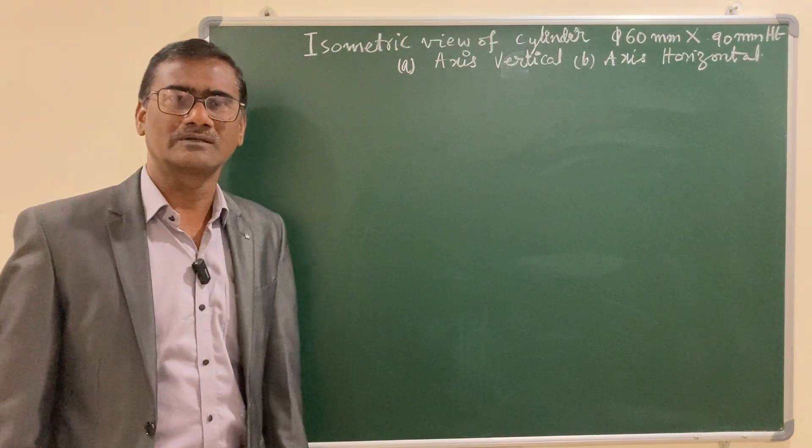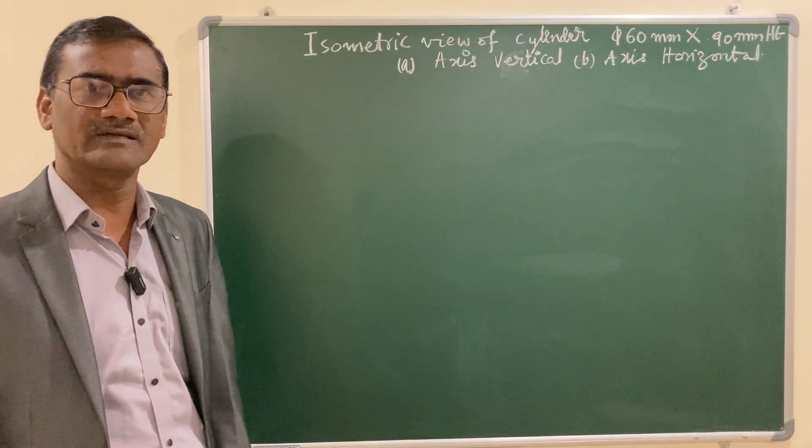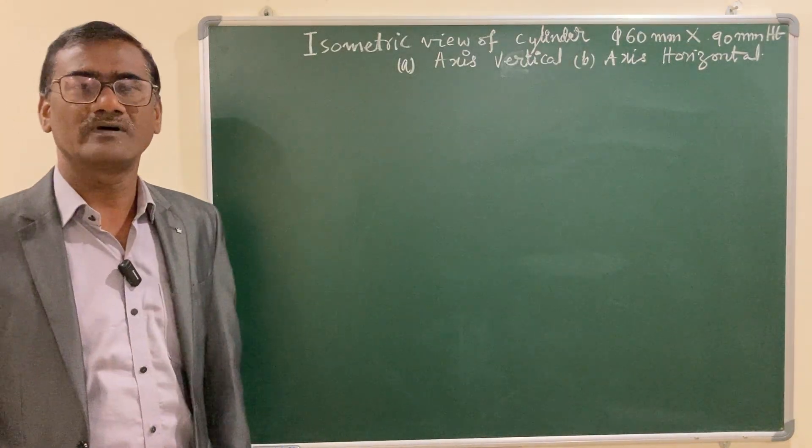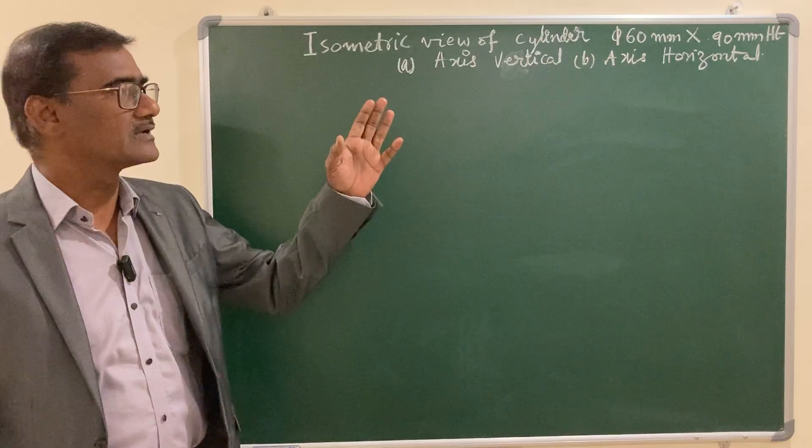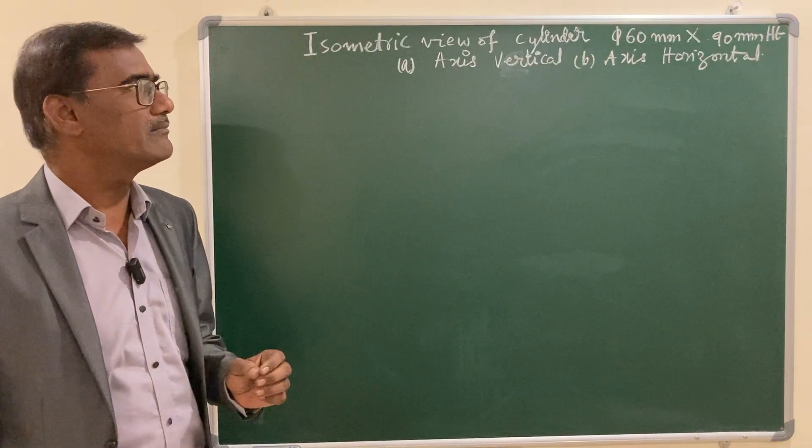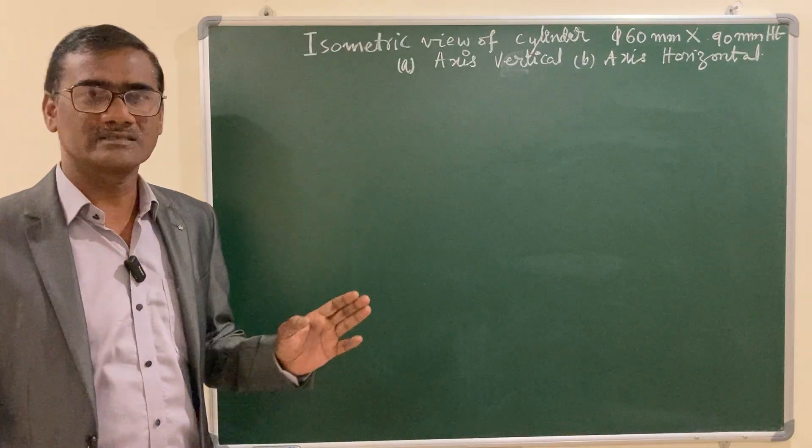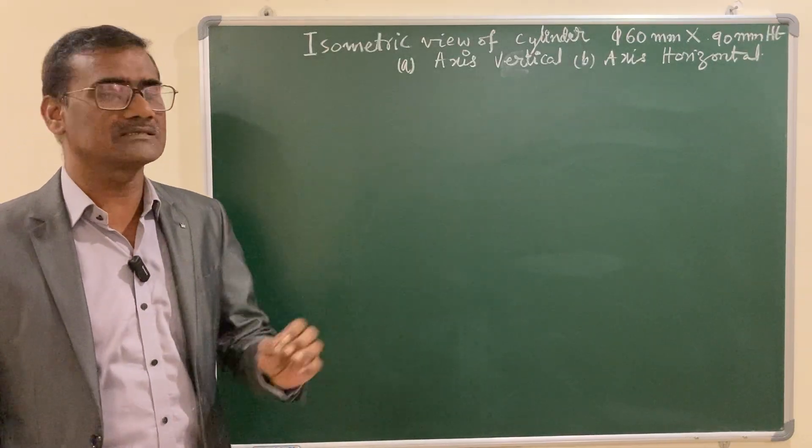Hello everyone, I am Dr. Ravi, Professor of Mechanical Engineering. Today's topic is isometric view of cylinder of dimensions diameter 60 mm and height 90 mm. You are supposed to draw with axis vertical and axis horizontal.